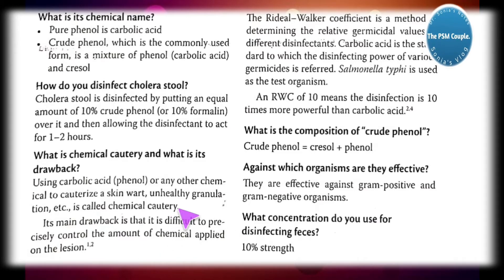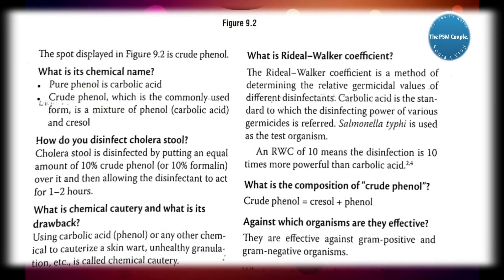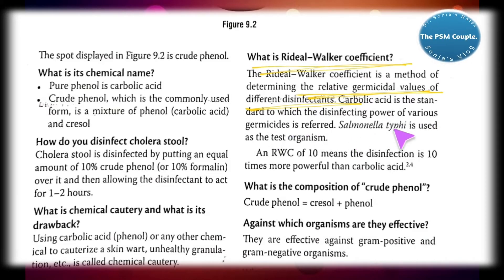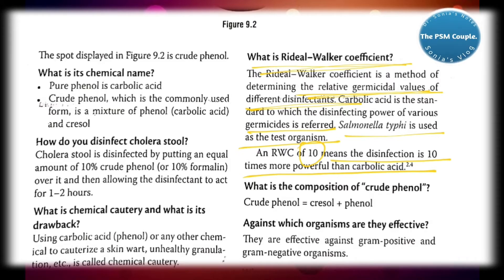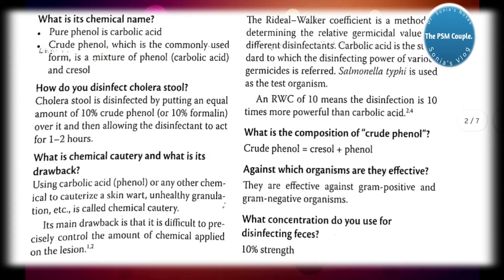What is the Riddle Walker Coefficient? The Riddle Walker Coefficient is the method of determining the relative germicidal value of different disinfectants. This is very important. Carbolic acid is the standard to which the disinfecting power of various germicides is referred. Salmonella typhi is used as the test organism. A Riddle Walker Coefficient of 10 means the disinfectant is 10 times more powerful than carbolic acid.